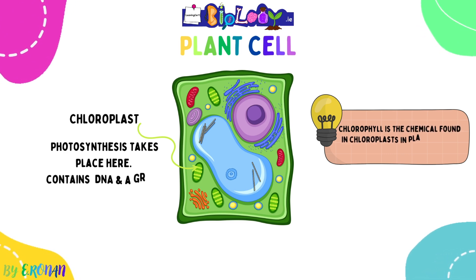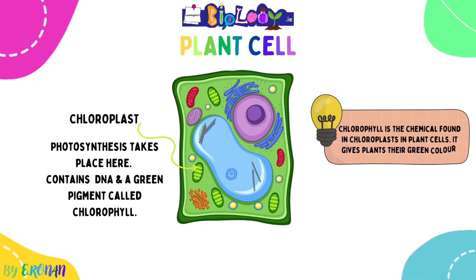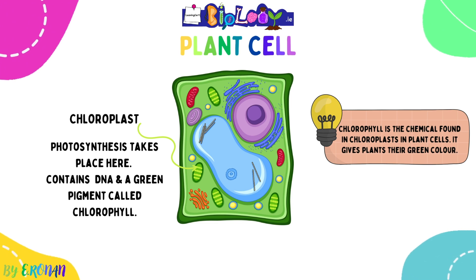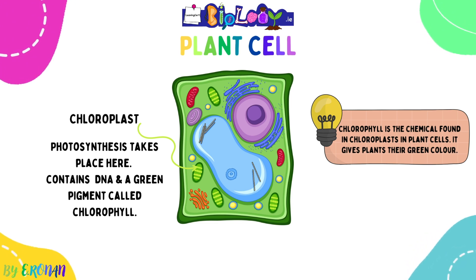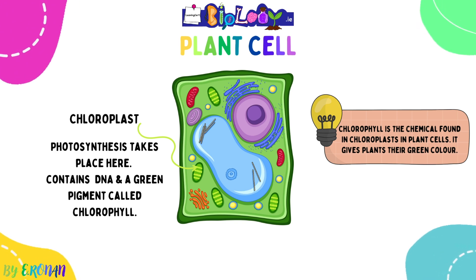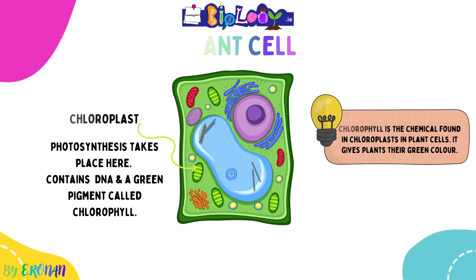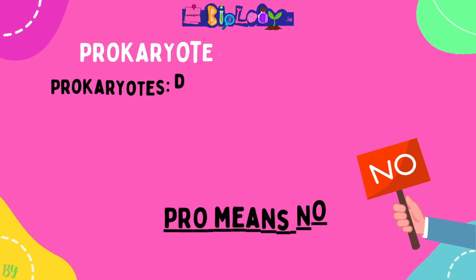The chloroplast is also found in plants and never in animals. It is the site of photosynthesis. It contains DNA and a green pigment called chlorophyll, which gives plants their green colour and absorbs light energy in photosynthesis. Both mitochondria and chloroplasts contain the genetic material DNA and are both membrane-bound organelles, so they are only found in eukaryotes, not in prokaryotes.